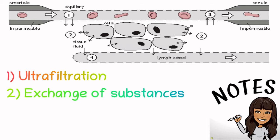At point two, we have the exchange of substances. Small substances such as glucose, oxygen, and amino acids move with the leaked water and are able to move into the cells. As water leaves the capillary at stage one, the pressure becomes reduced at the venule end at stage three, and we've also lost water at the arterial end. So there's a difference in water potential between the capillary and the tissue fluid. At stage three, some water from the tissue fluid re-enters the capillary by osmosis — there's a higher water potential in the tissue fluid and a lower water potential in the capillary. Waste products such as carbon dioxide move into the venule by diffusion.